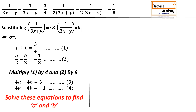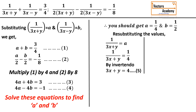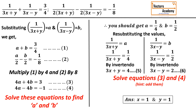Now we have two linear equations. Solve them using any method to find the values of a and b. Once you get a and b, resubstitute back into the variable equations. Taking invertendo gives another equation in 3x plus y, and resubstituting b gives yet another equation — call them equations 5 and 6. Then solve these two equations to finally get the values of x and y.